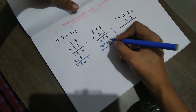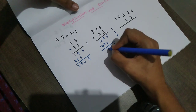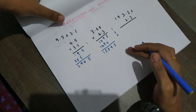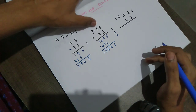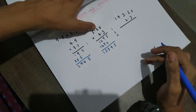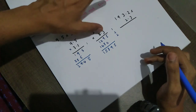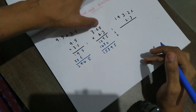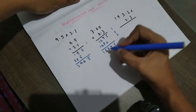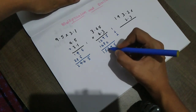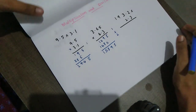For example: 3.65 multiplied by 4.3. The first number has two decimal places. The second number has one decimal place. Total: 1, 2, 3 — three decimal places. So the answer will have three decimal places.